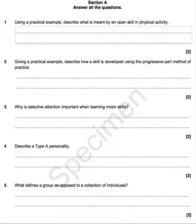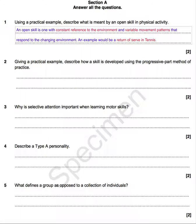Here's my answer for this one. An open skill is one with constant reference to the environment and variable movement patterns that respond to that change in environment. An example would be a return of serve in tennis. You are unlikely to get any marks unless you've included a specific practical example — 'tennis' alone would not be a practical example, as you need to specify the actual skill.